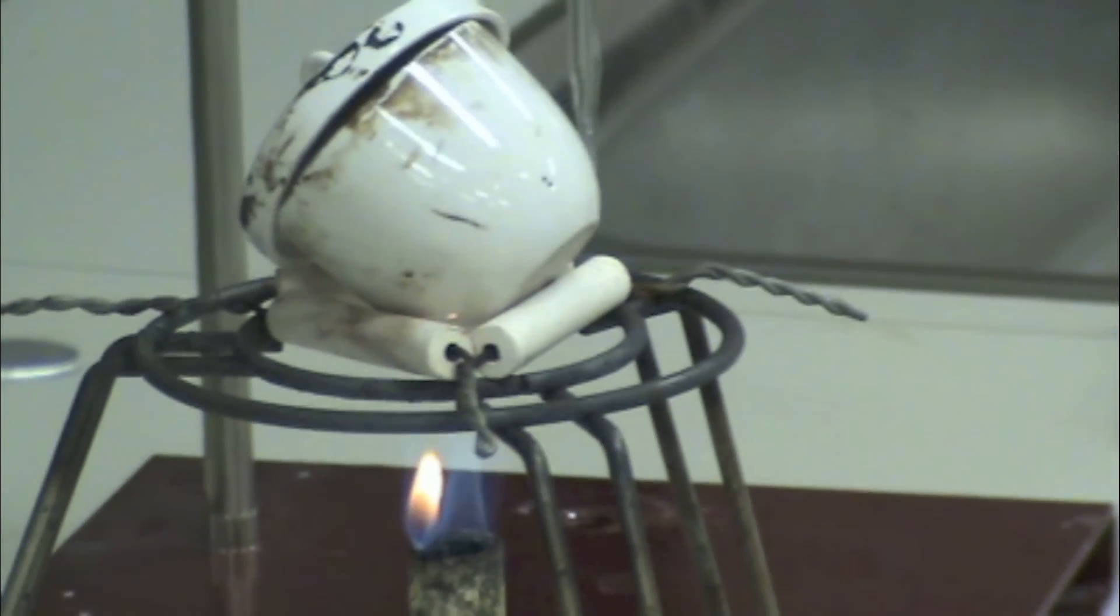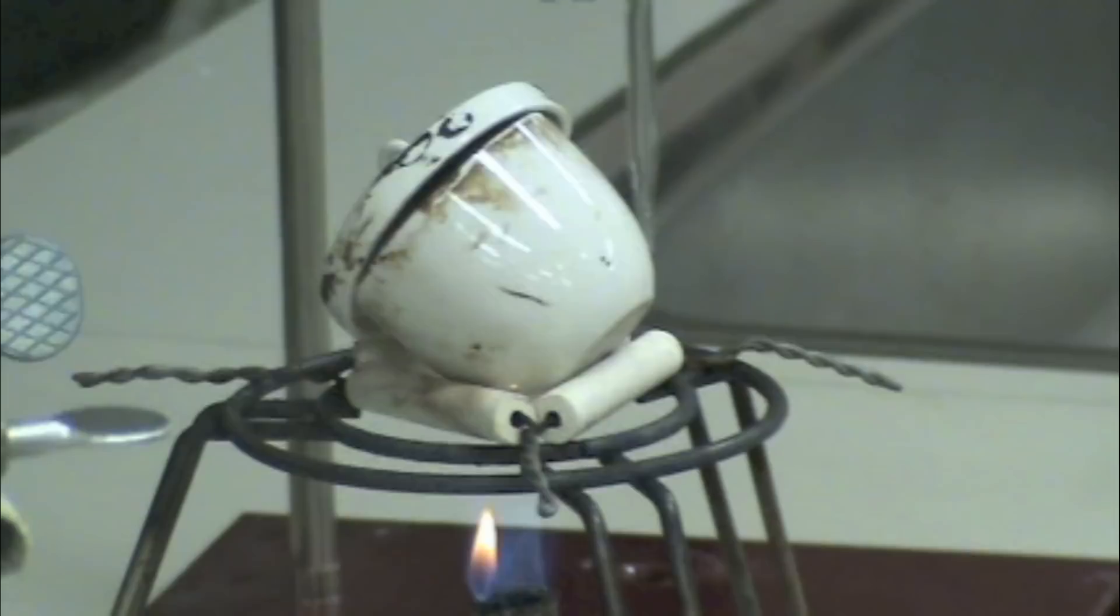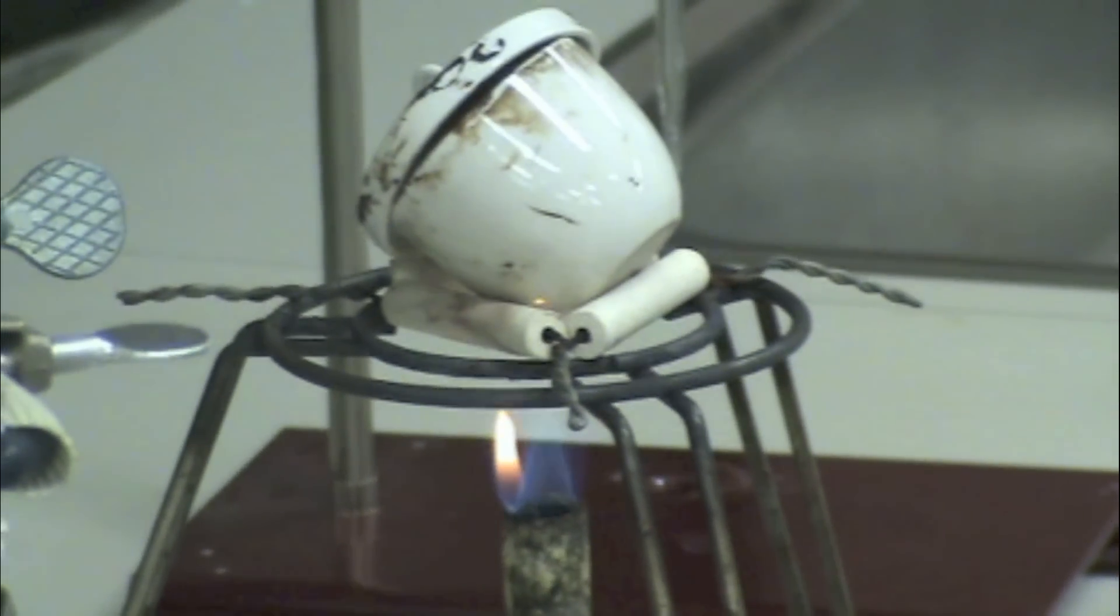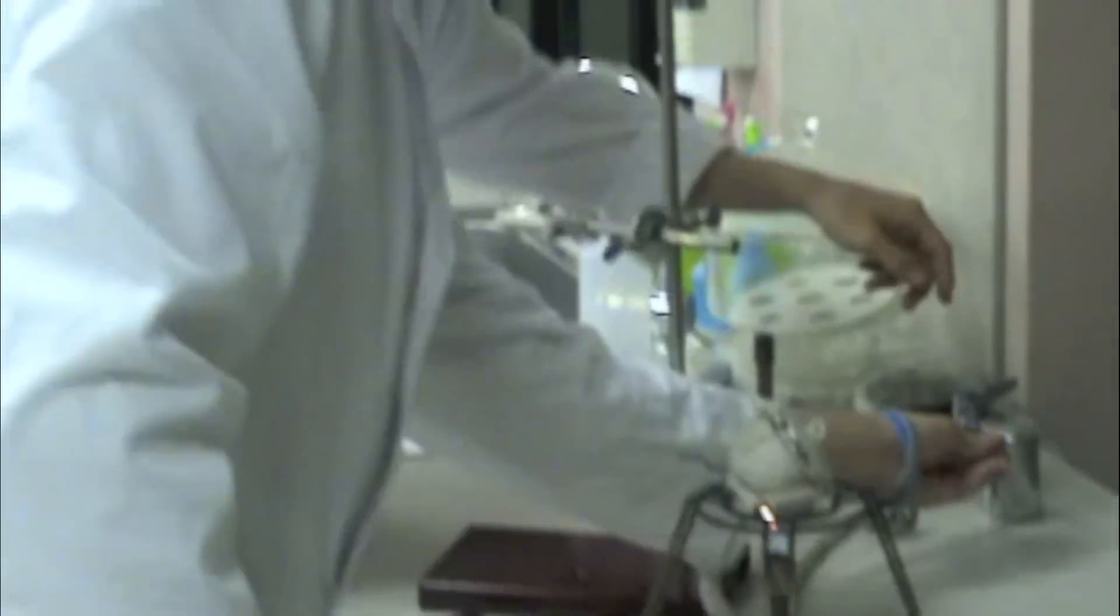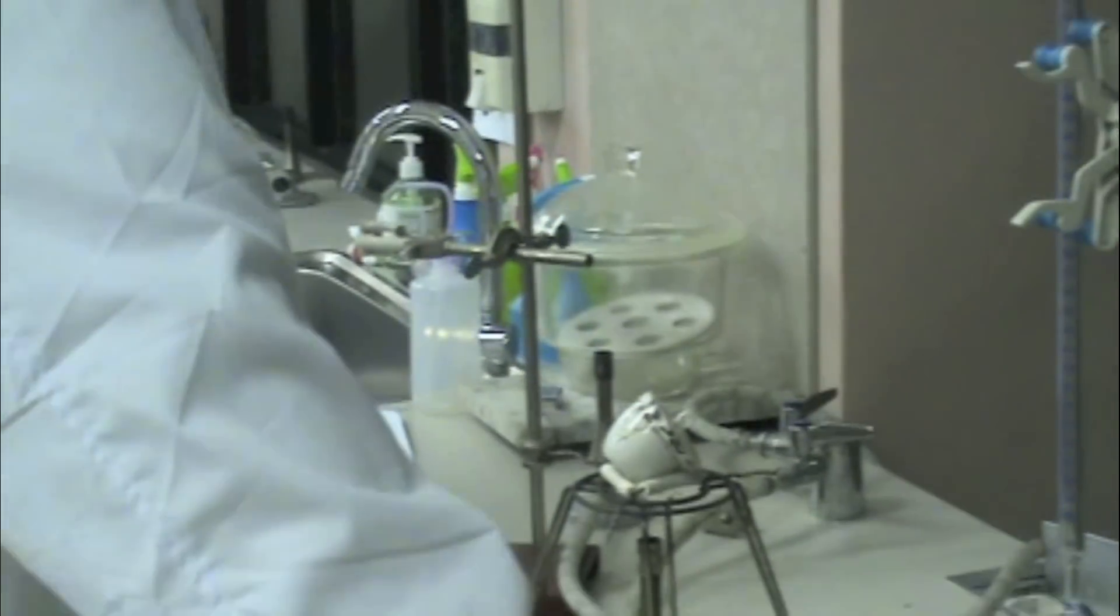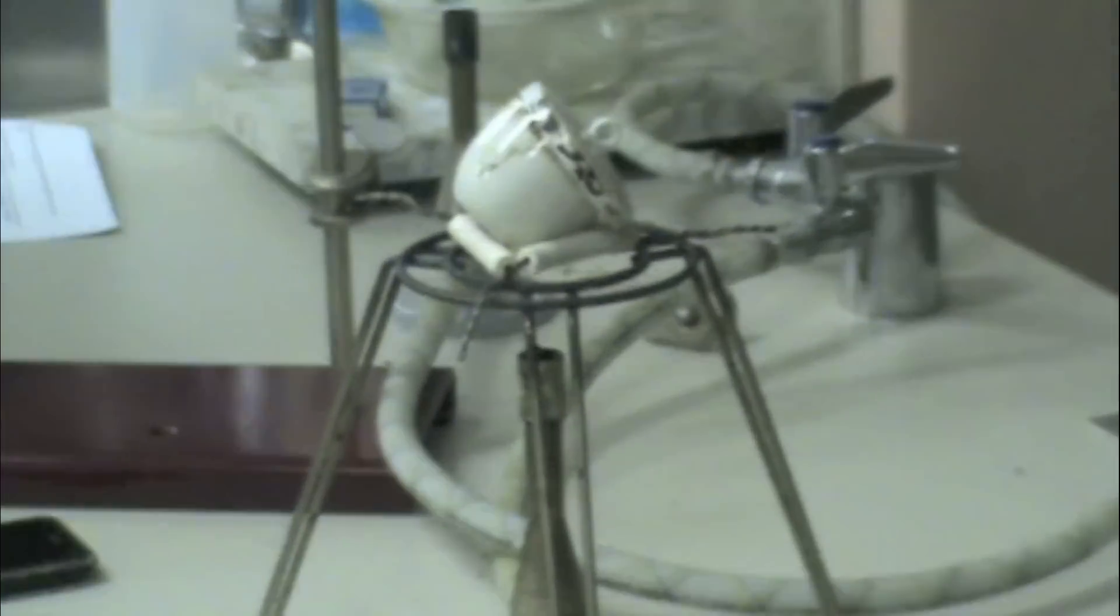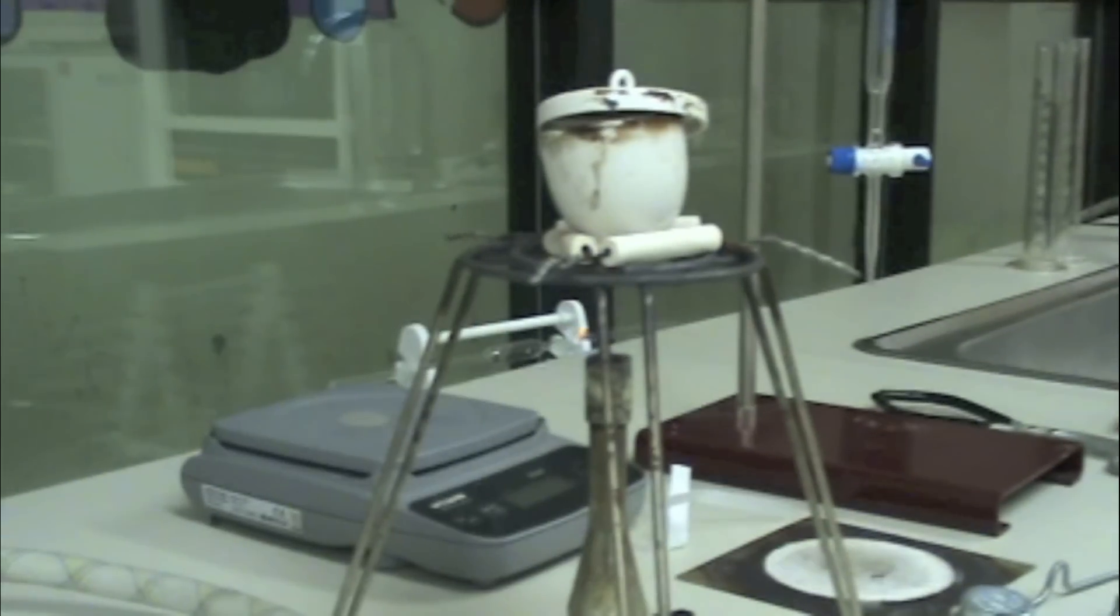While heating, don't forget to keep the lid slightly ajar so that any gas made from the reaction can escape while splattering from the crucible is blocked. As for the time of the heating, some reactions require more heat than others and so need more heating time. Still, try about 10 minutes or so, or more if your reaction needs a lot of heat.